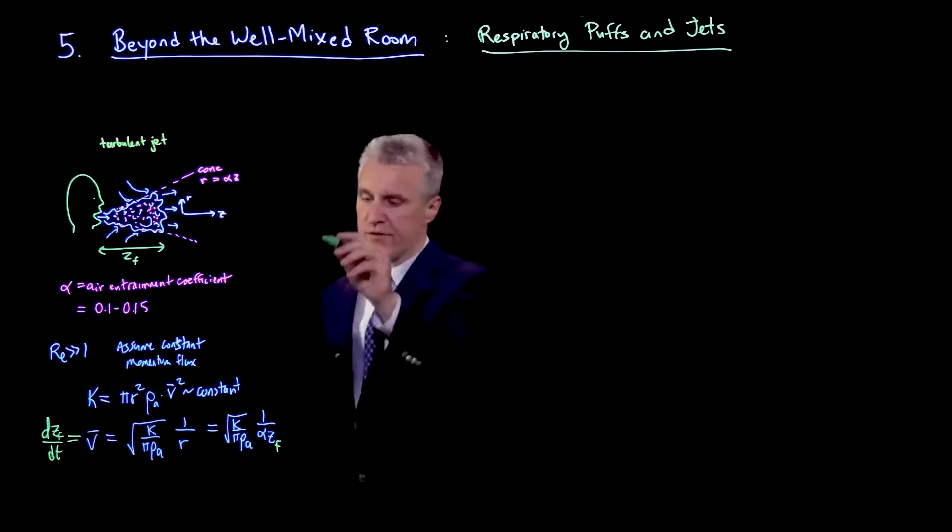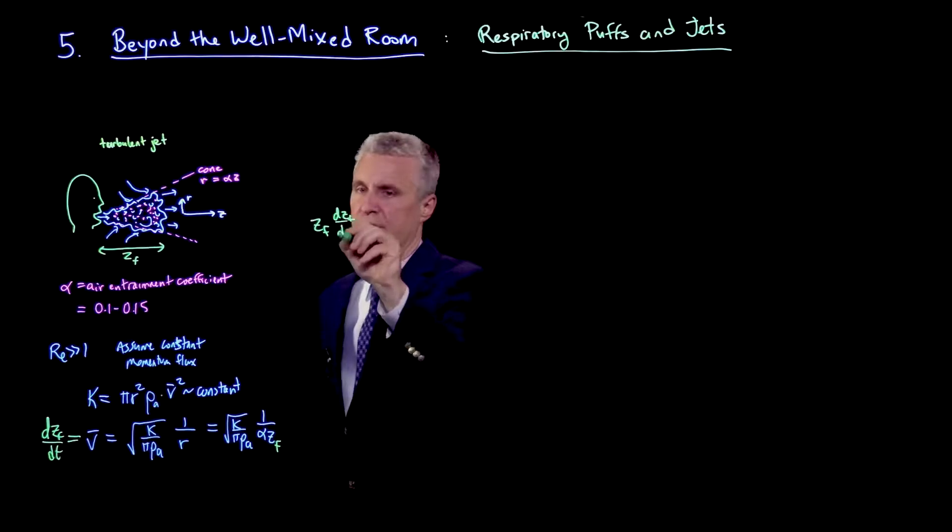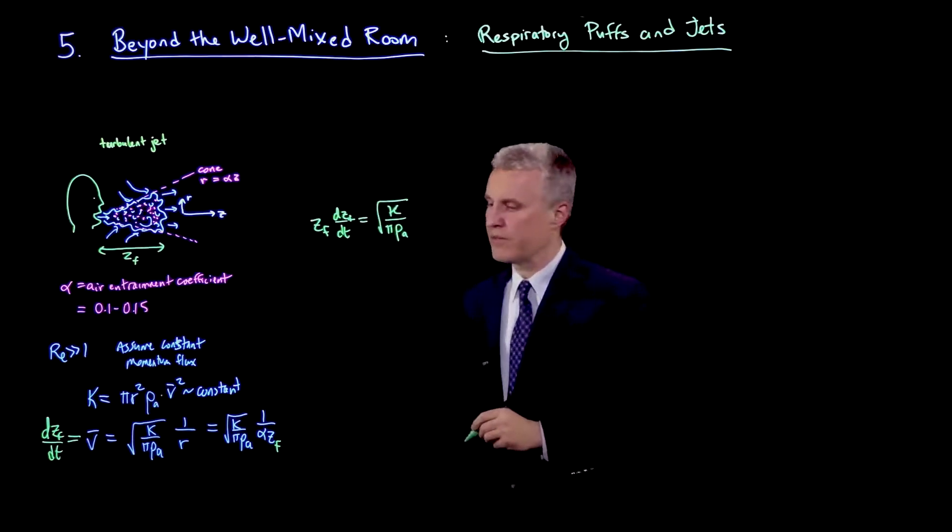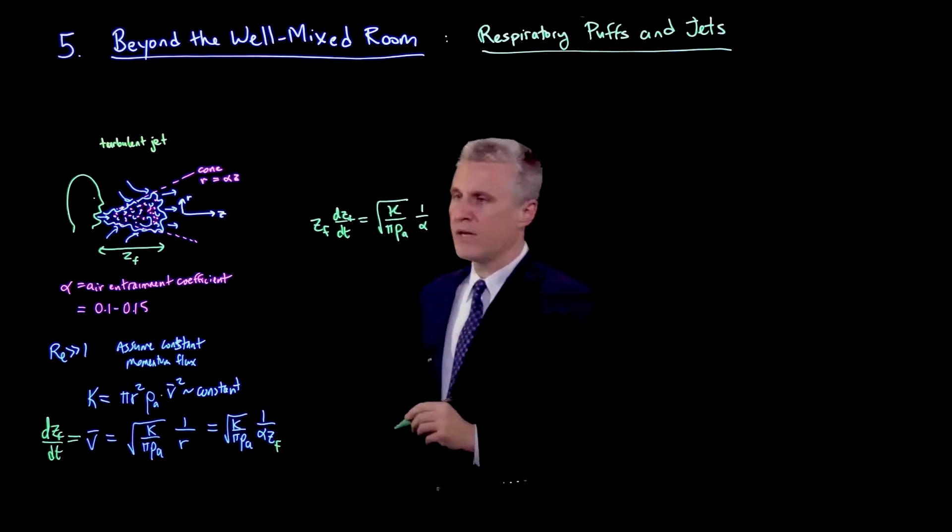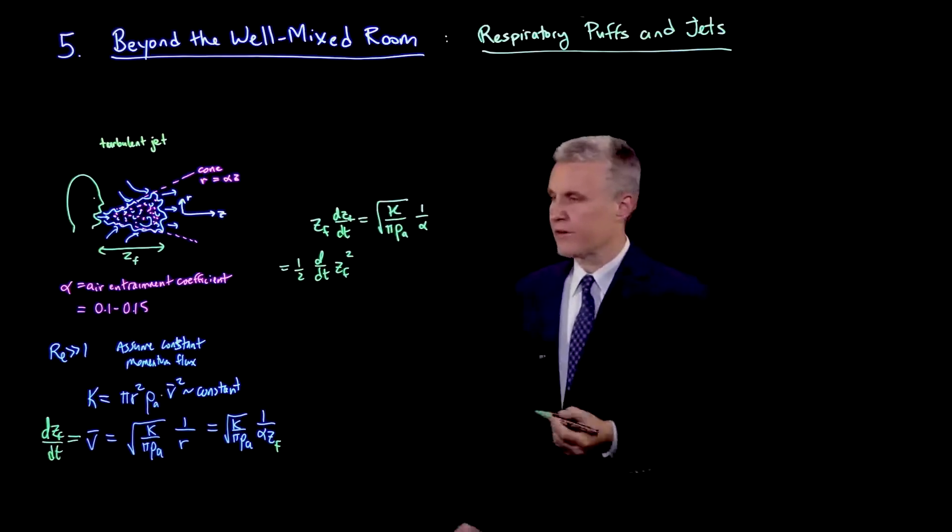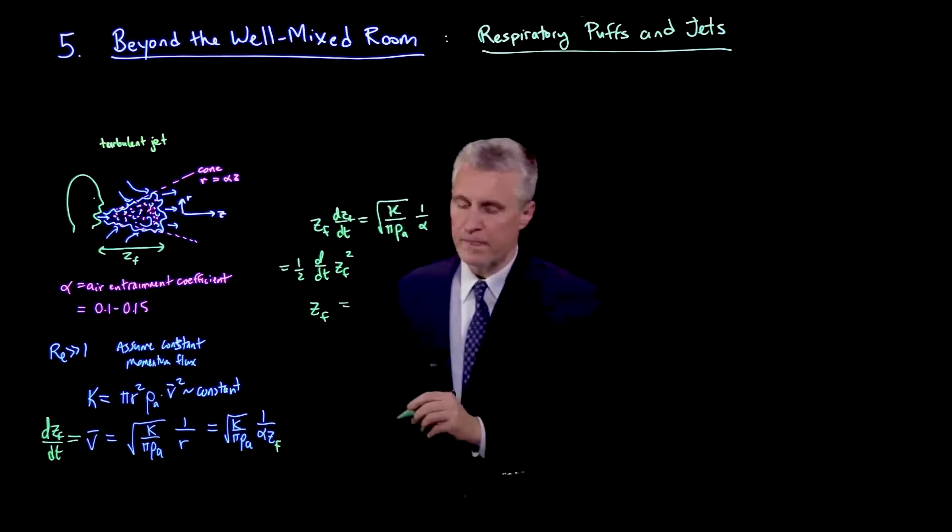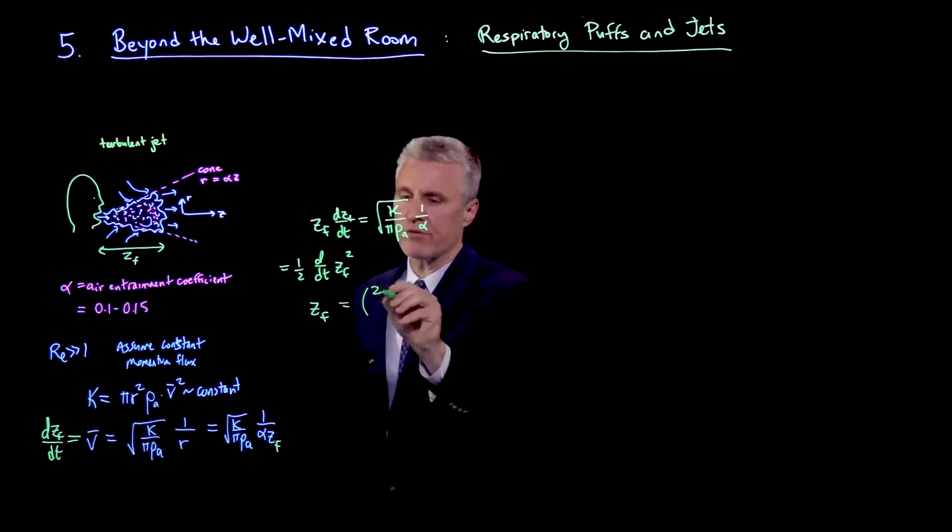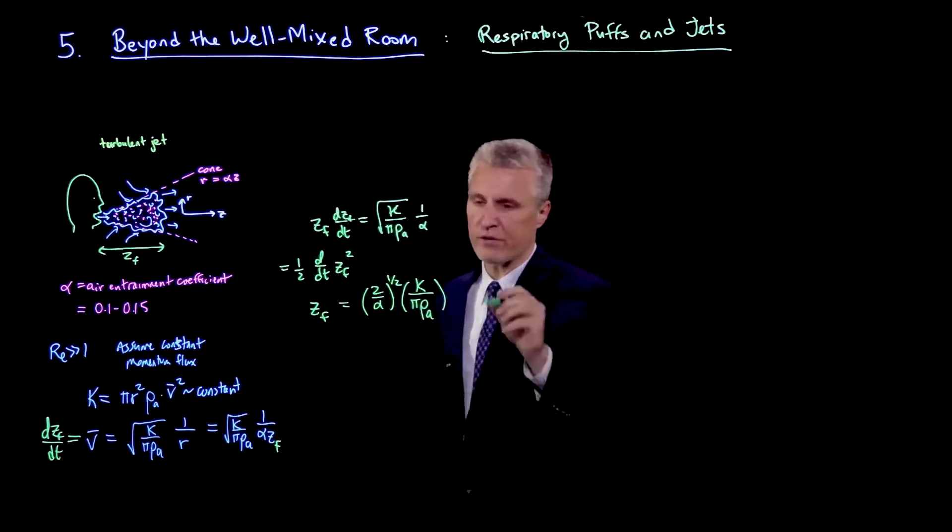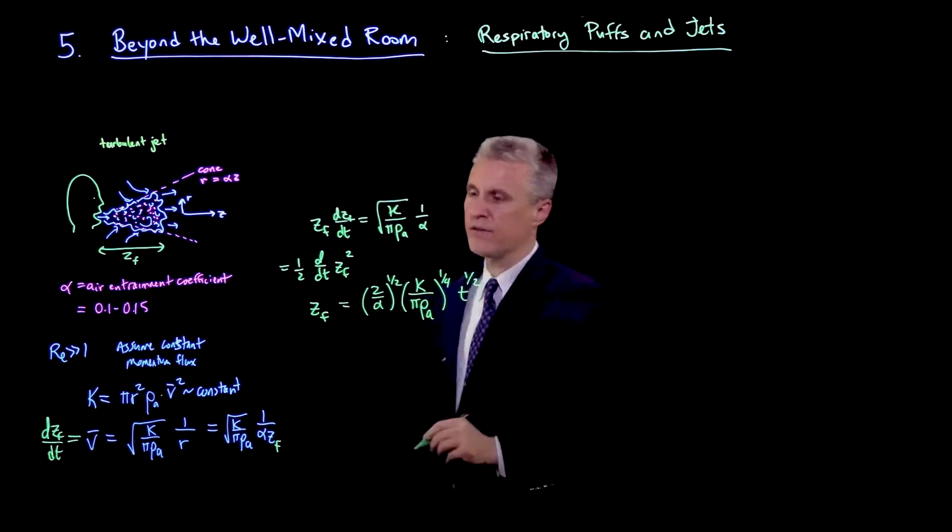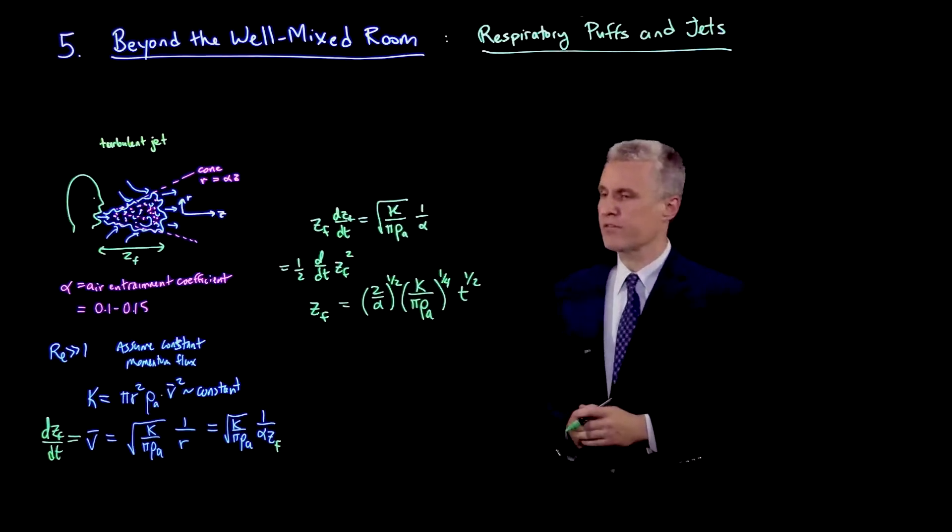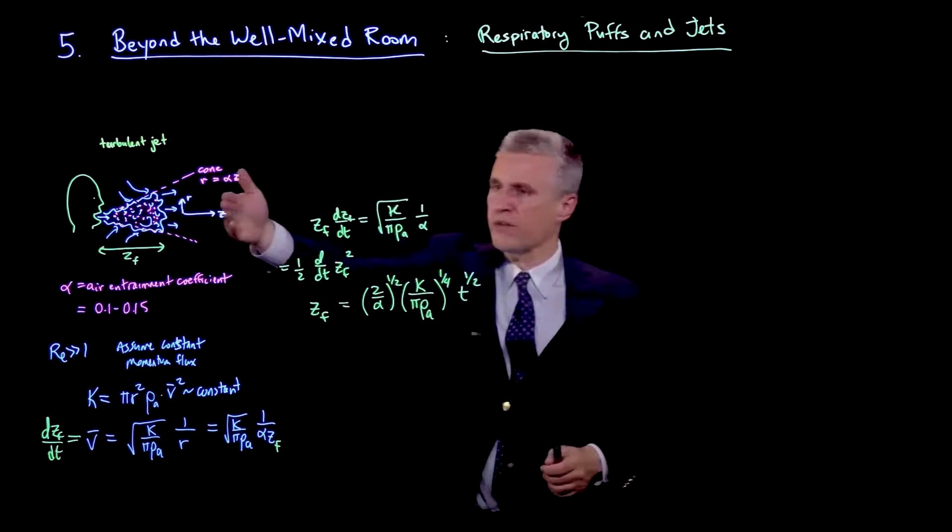And if this is zf, so I apply this at the front, then I can put the zf on the other side. And I have zf d zf dt is equal to square root of k over pi rho a, and then I've got also an alpha or 1 over alpha. And then this expression here can be written as 1 half times the derivative of zf squared. So I can then solve for the position of the front. And I find zf is equal to, well, let's see what I get. I put the 2 on the other side and I take a square root. So I get 2 over alpha to the 1 half. I get k over pi rho a. It was square root. And then I take another square root. So I get a 1 quarter. And then I get t to the 1 half. Because when I integrate this equation, I get zf squared is all this stuff times t, starting from t equals 0.